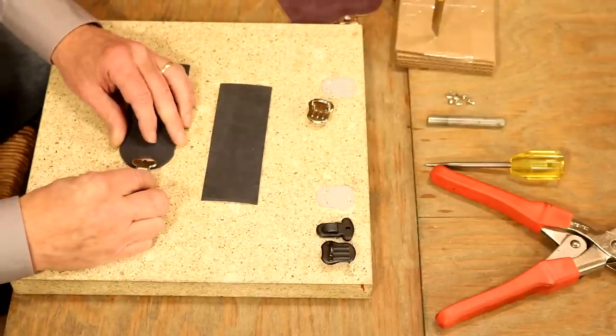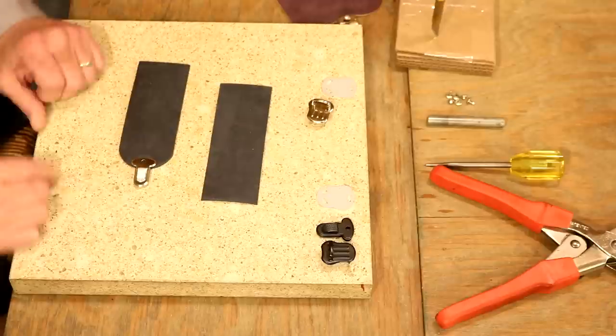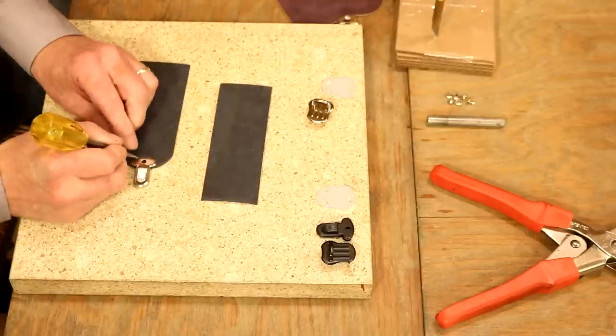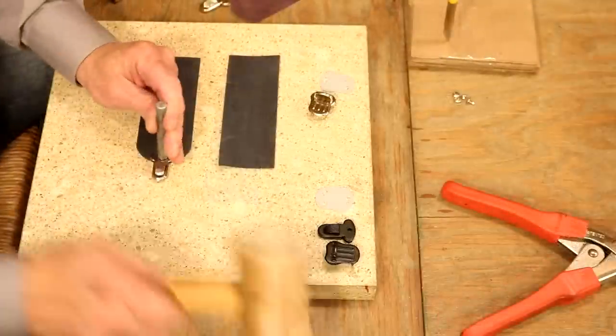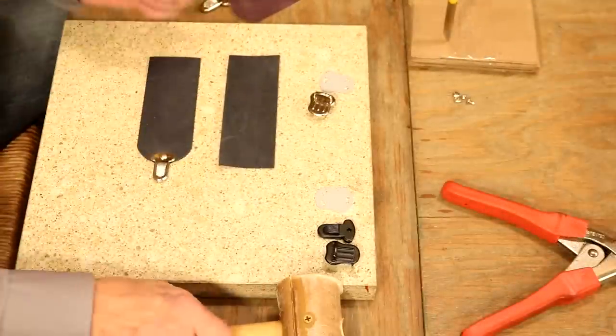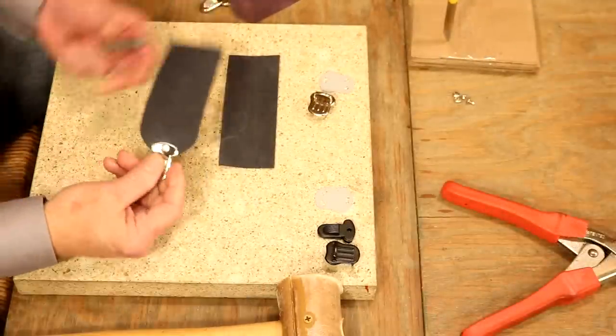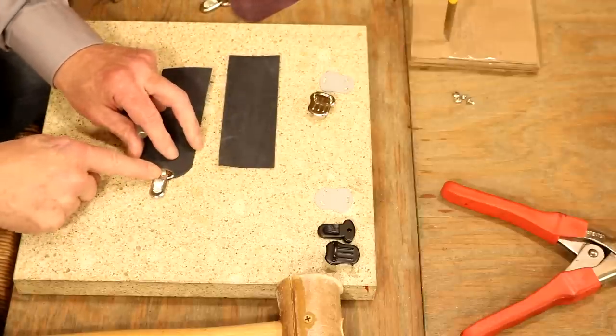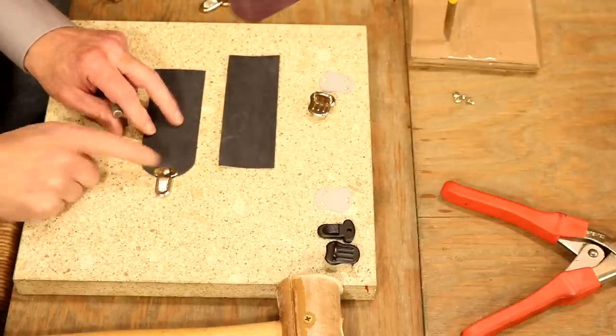On this side, I'm going to mark for a rivet hole. I'm going to punch and set a rivet. I don't want to hit that too hard. That's relatively thin metal and pretty thin leather. I don't really want to crush that, but that looks good.